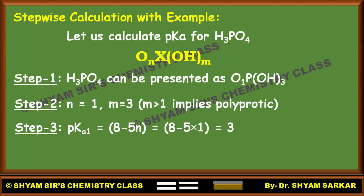Since H₃PO₄ is a polyprotic acid, it will have two other pKa values. By Rule 2, 5 is successively added. So pKa2 will be 3 plus 5, that is 8, and pKa3 will be 8 plus 5, that is 13. In this way you can calculate all pKa values for a polyprotic acid.